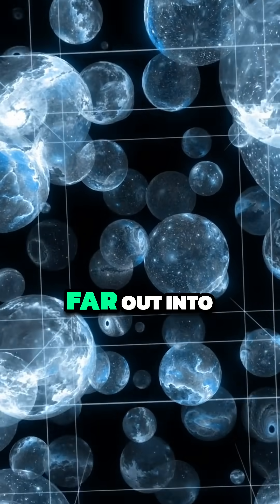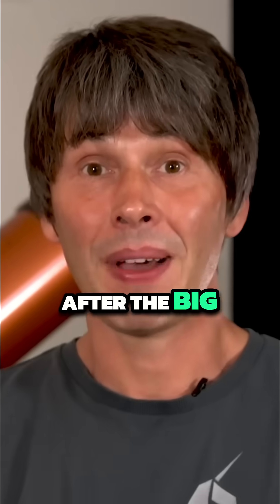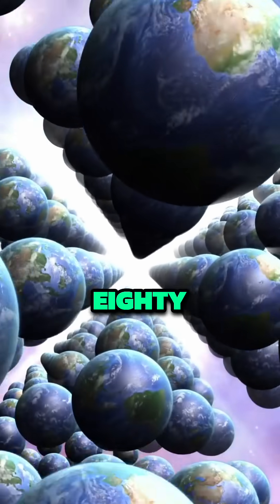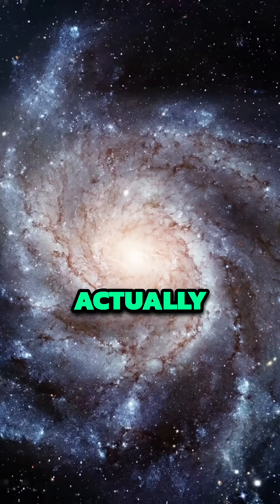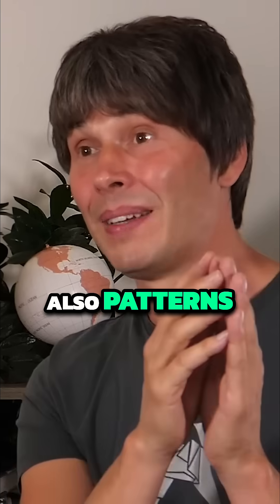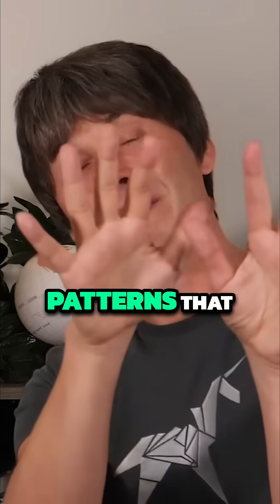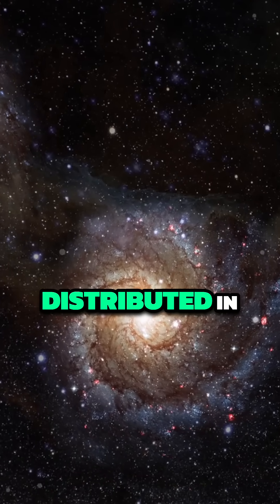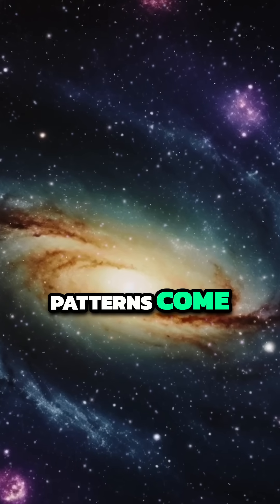We can look so far out into space that we can see the light from just after the Big Bang, about 380,000 years after the Big Bang actually. And in that light, before there were stars and galaxies, there are also patterns, which are patterns that match onto the way the galaxies are distributed in the sky today. And then where did those patterns come from?